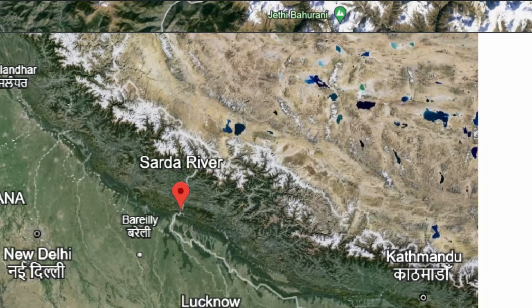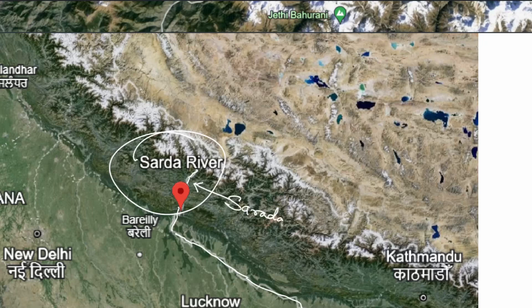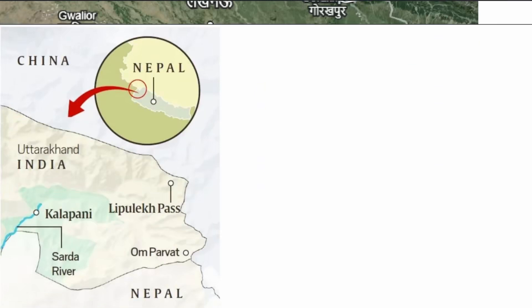Let's also look at the Sharda River. This is the Sharda River — a natural boundary formed between India and Nepal. The western bank of the Sharda River or Kali River — they are the same river — demarcates a natural boundary between Nepal and India. The three disputed areas to remember are: Limpia Dura, the Lipulek Pass, and the Kalapani area.